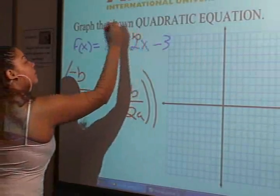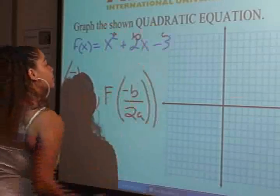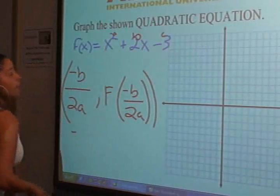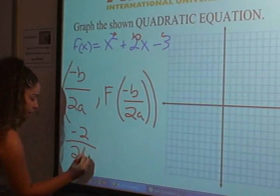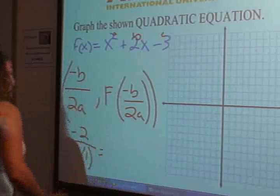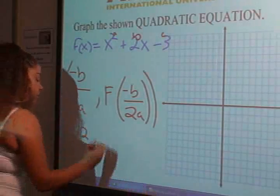So, b and c, so we have negative 2 over 2 times 1 for x. That gives us negative 2 divided by 2, negative 1.